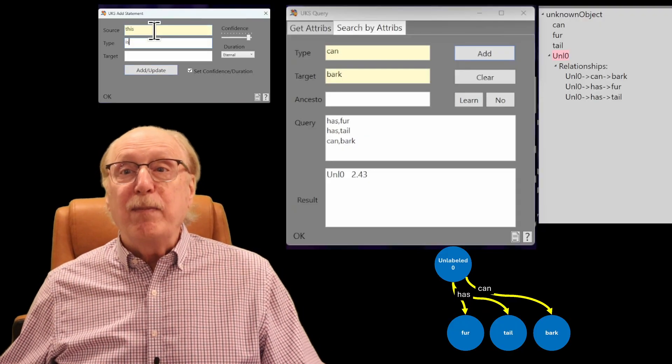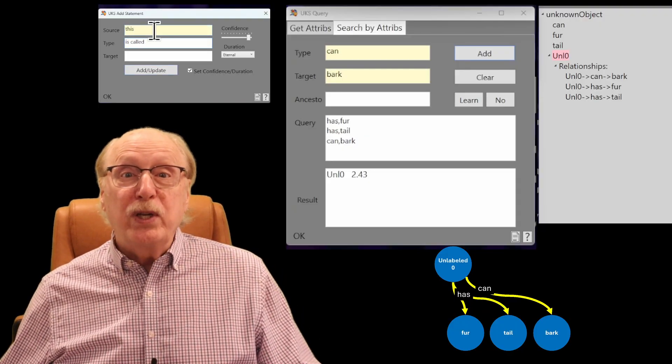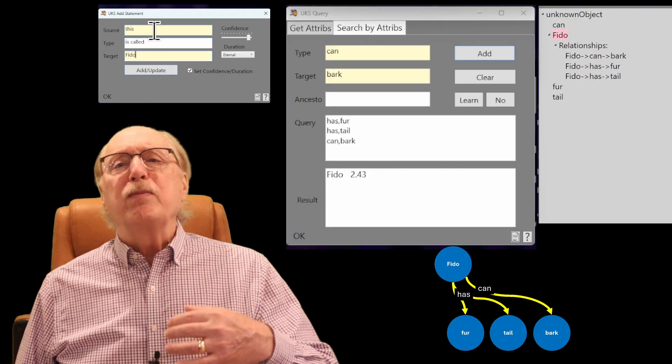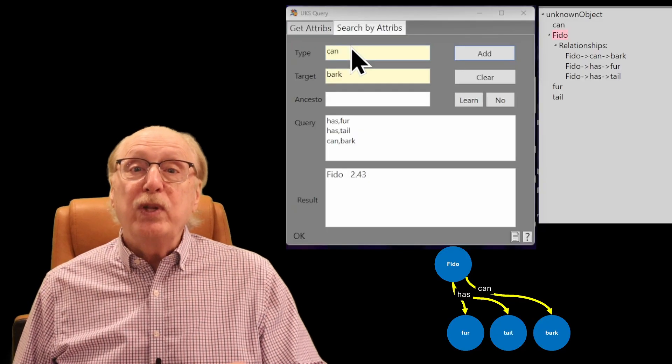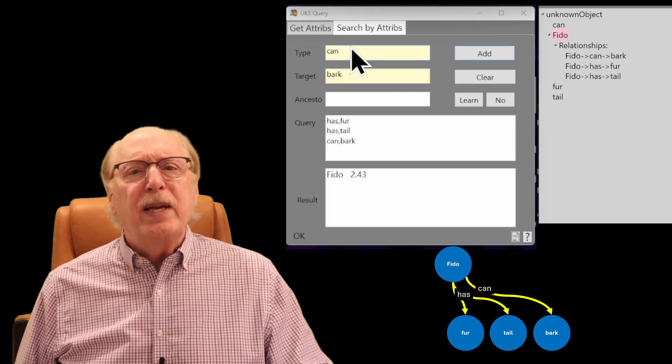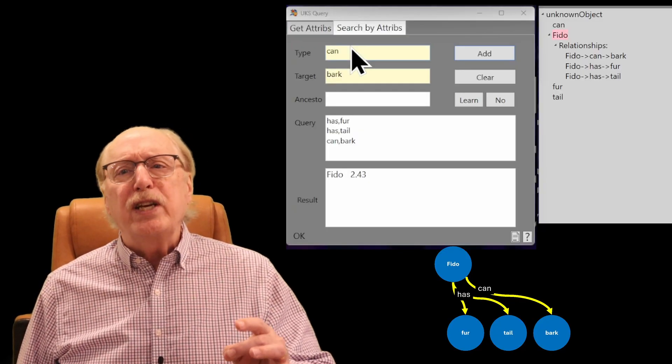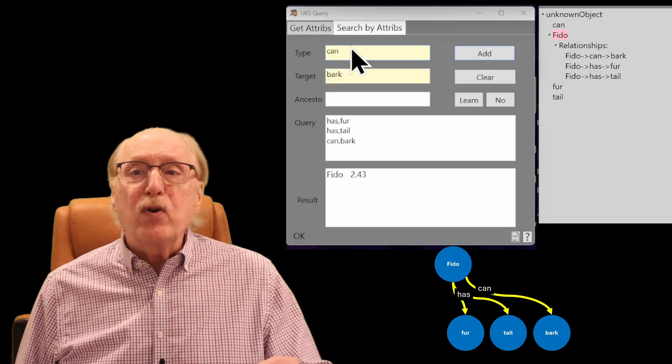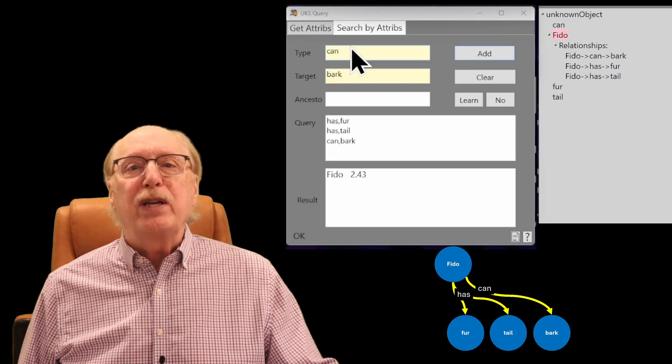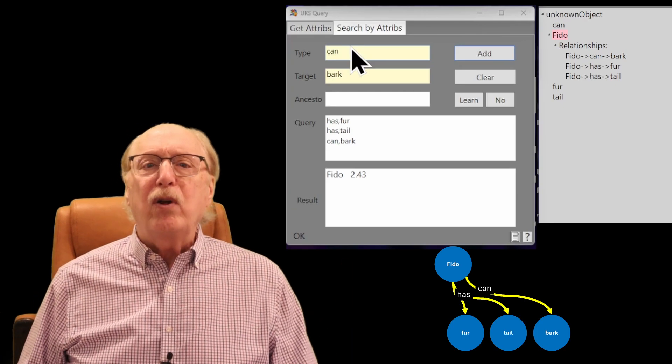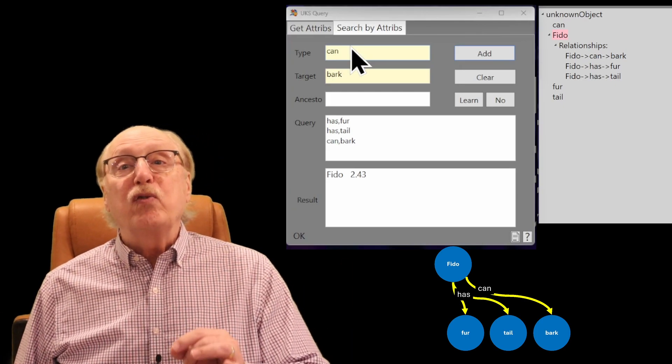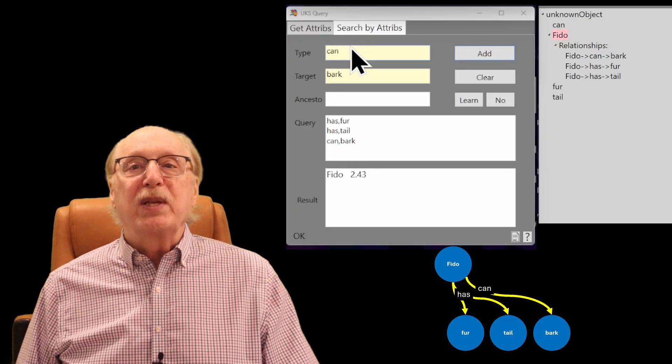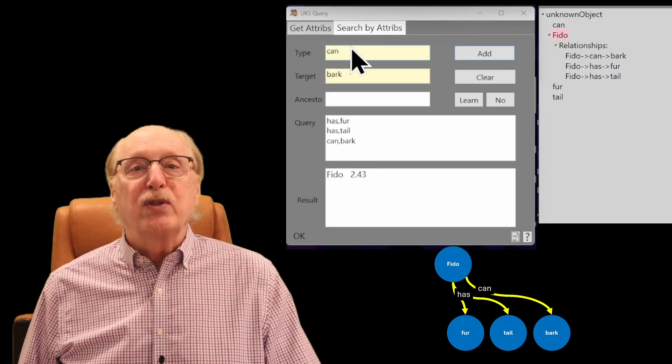This is a key point. Brains don't have a specific learning mode with unique inputs. Information just pours into the brain, which does its best to make sense of it all. At some time later, you could be told, this is called Fido. The system simply associates a label to the existing node.